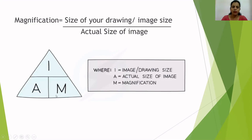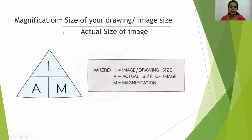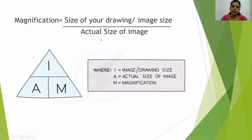If you have image size and magnification and need to calculate actual size, you can rearrange: actual size equals image size divided by magnification. Similarly, if you have magnification and actual size and need the size of the drawing, then image size equals actual size multiplied by magnification.